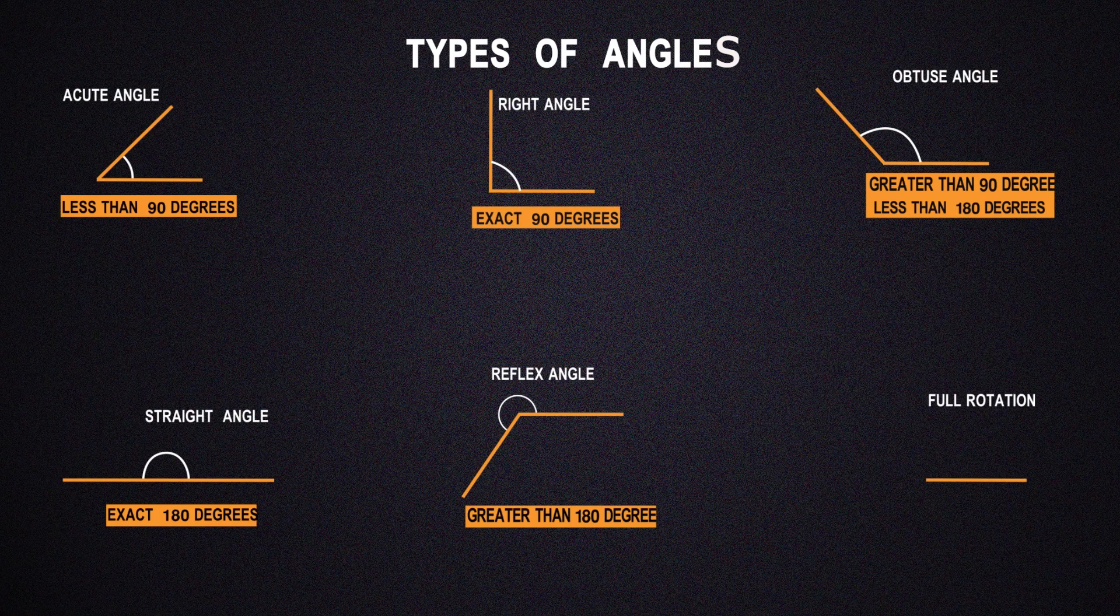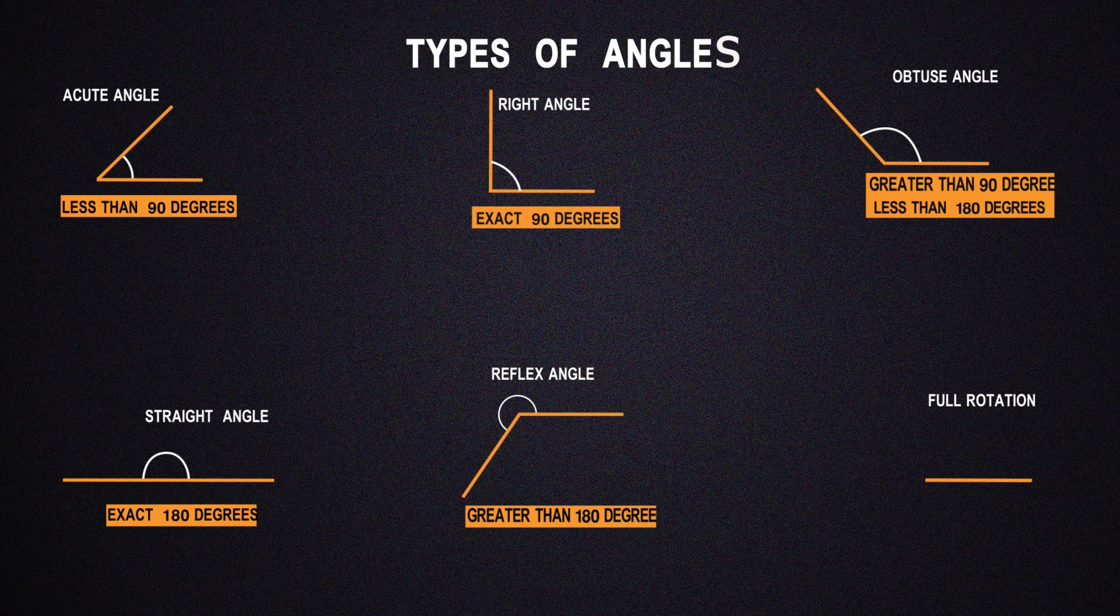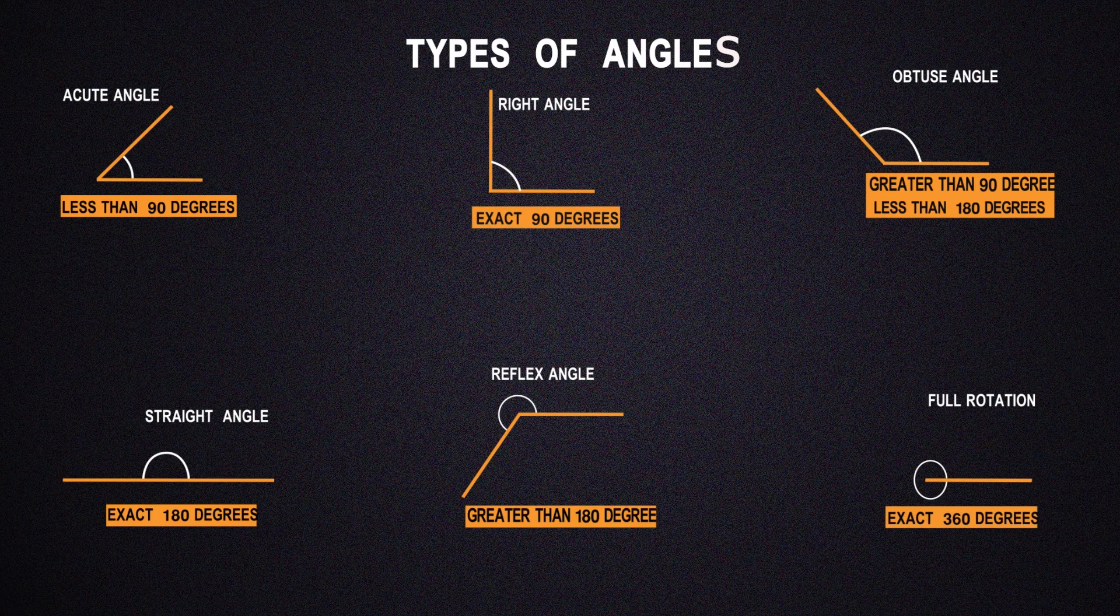And finally, here we have a full rotation. A full rotation is an angle that is exactly 360 degrees.